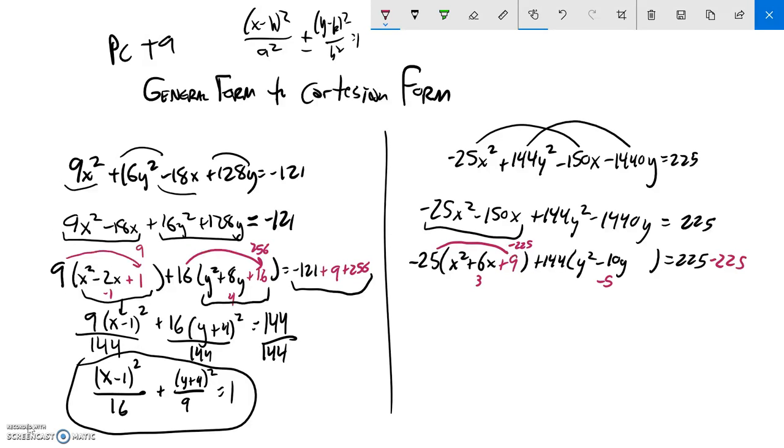Half a negative 10 is negative 5. I square that as a 25. And notice I get 144 times 25, which is 3,600. So what I've added here is a 3,600. I'm going to add that over here.